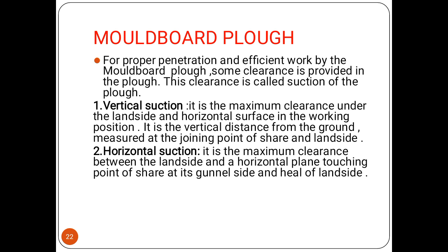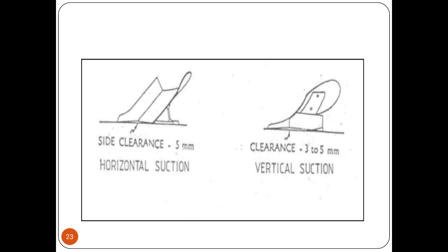For proper penetration and efficient work by the moldboard plow, some clearance is provided in the plow called the suction of the plow. Vertical suction is the maximum clearance under the land side and horizontal surface in the working position — it is the vertical distance from the ground measured at the joining point of the share and land side. Horizontal suction is the maximum clearance between the land side and the horizontal plane touching the point of the share at the canal side. You can see the horizontal suction and vertical suction illustrated.